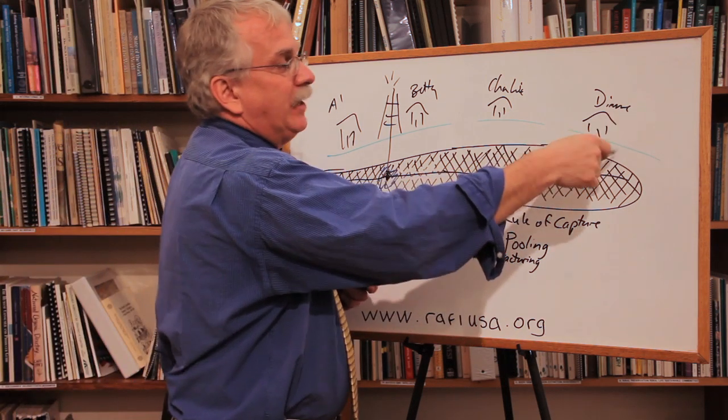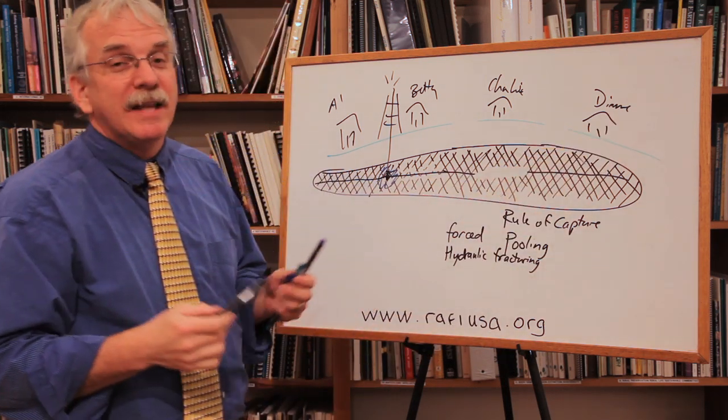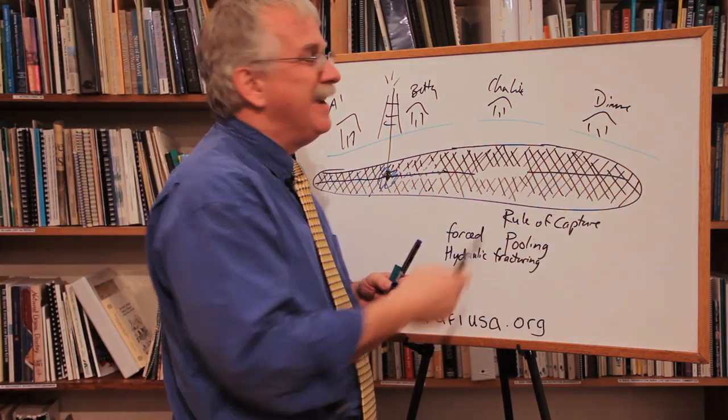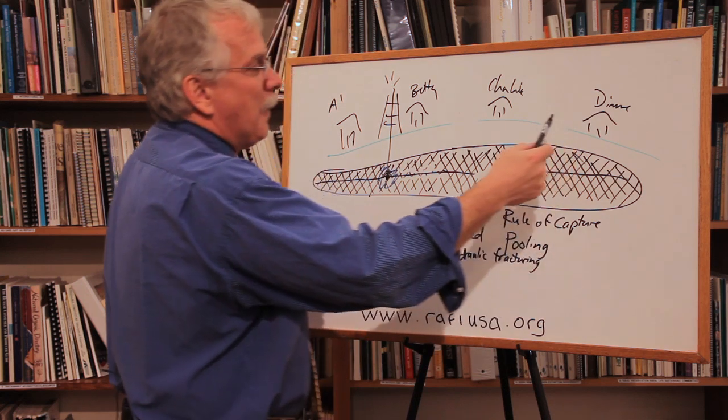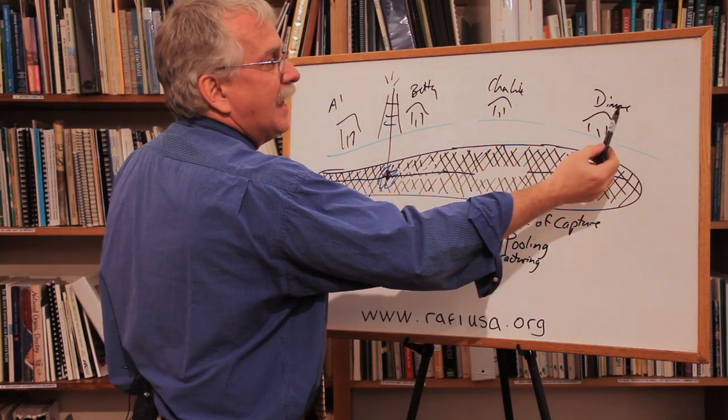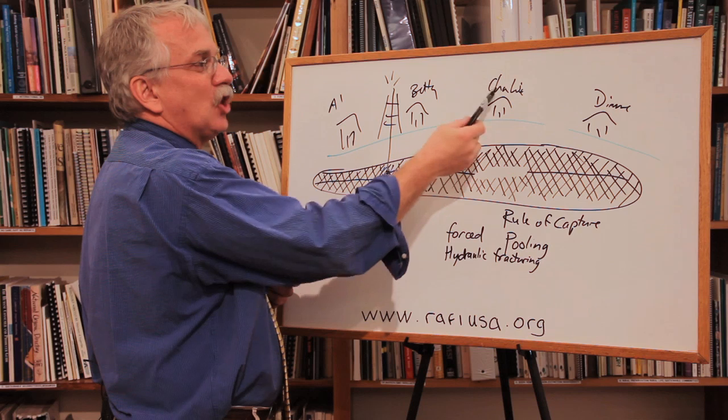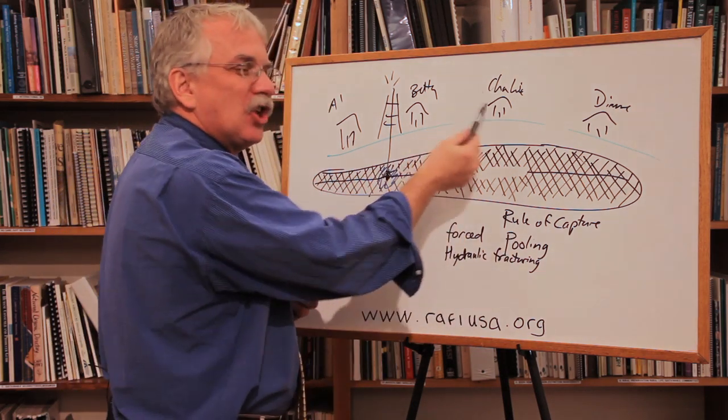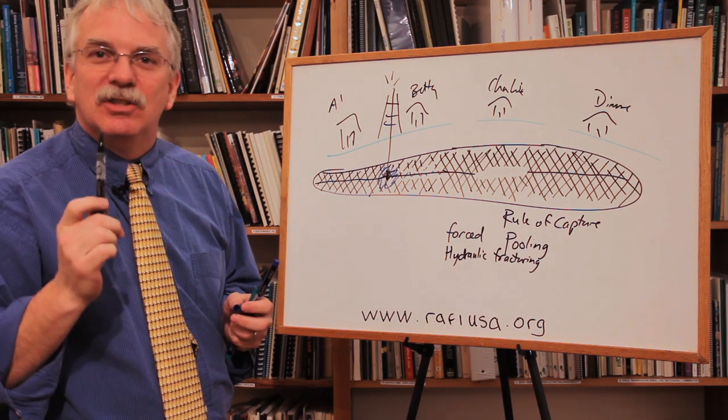Now Diane could put in a well of her own, but that's not cost efficient. There might be people or something else on the other side, but that may not work either. But here we have, in order for Diane to sell her gas, it's not just that they have to get access across the land, but Charlie has to sell his gas too.